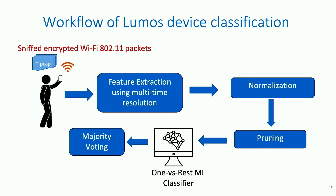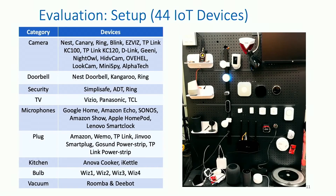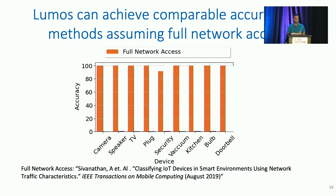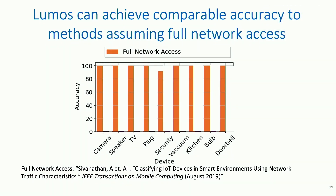Our evaluation setup consists of 44 different IoT devices spanning multiple vendors across nine different categories. This is a picture of our setup, which we use for training and testing our system. First, I'm showing results from prior work that assumes full network access at the router, which is impractical for our scenario. As you can see, it works quite well across the board and can detect all types of devices.